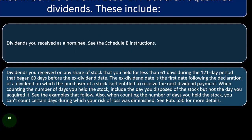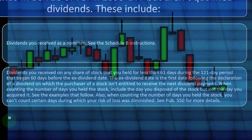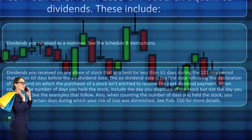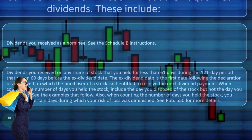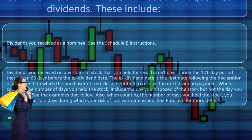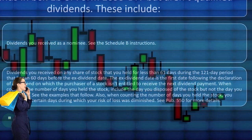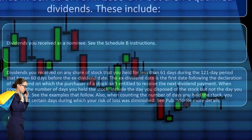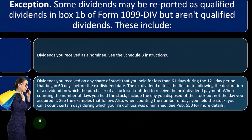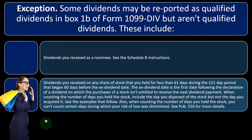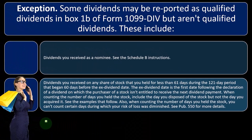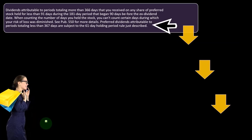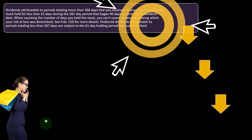Usually you'd be okay to report what's on the Form 1099-DIV, but if you're in a day trader type of situation, it's likely that you might have some of these situations where you're buying and selling stocks on a shorter timeframe, which means you could run into problems.